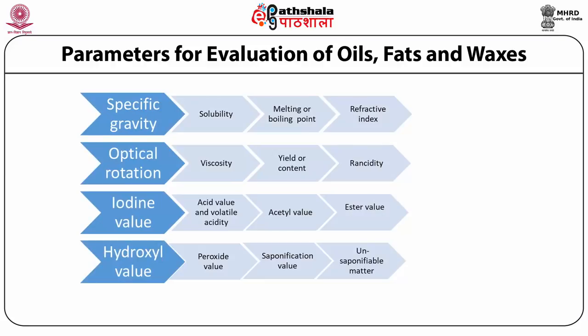This is a visual presentation of various parameters for evaluation of oils, fats and waxes. Physical parameters include specific gravity, solubility, melting and boiling point ranges, refractive index, optical rotation, viscosity, fat content and rancidity. Chemical parameters include iodine value, acid value, acetyl value, ester value, peroxide and hydroxyl values, along with saponification value — all based on the chemical composition of these oils, fats and waxes.